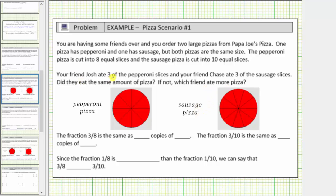Because Josh ate three of the pepperoni slices, let's just say Josh ate these three pieces, which notice how it would be three-eighths of the pizza.